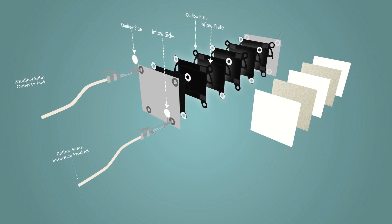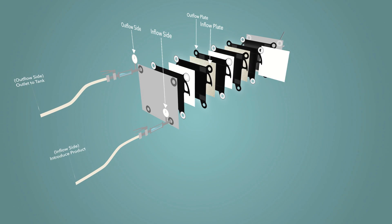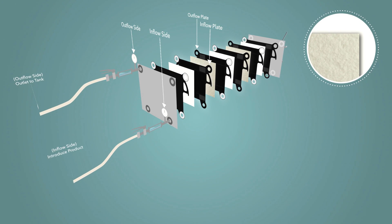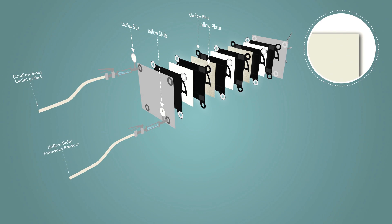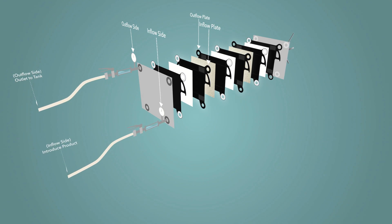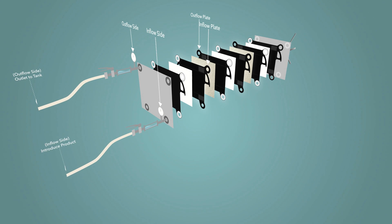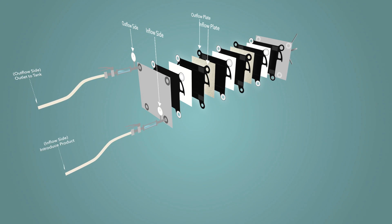Insert one filter sheet in between each plate of the filter. The rough side should be facing the inflow plate and the smooth side should be facing the outflow plate. By doing this, you will notice that the direction of the sheet will alternate from one plate to the next.